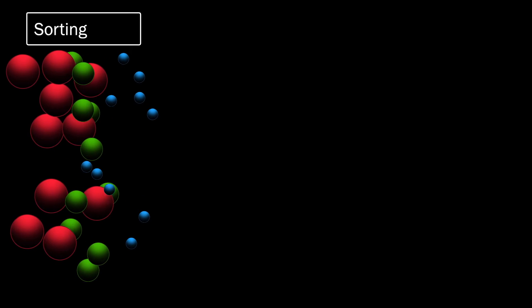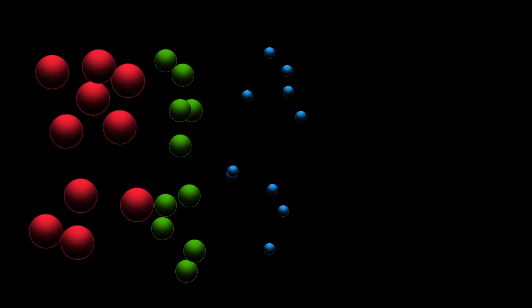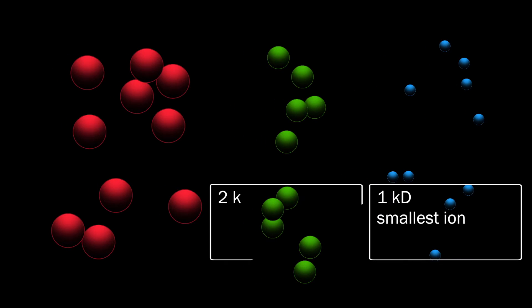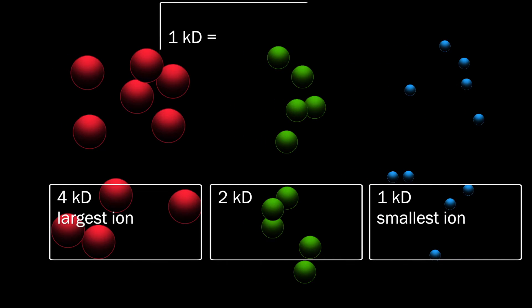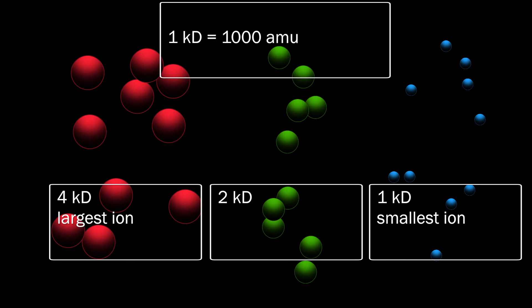In this example, we have a mixture of three macromolecules with masses of one, two, and four kilodaltons, where one kilodalton equals one thousand atomic mass units. Using standard TOF conditions, this would cause the smaller one kilodalton ion to be accelerated to the fastest velocity, around 54 kilometers per second.